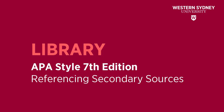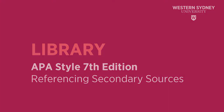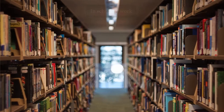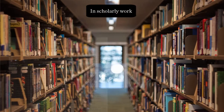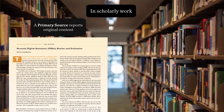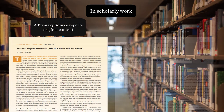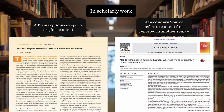This library video will explain how to reference secondary sources in APA style 7th edition. In scholarly work, a primary source reports original content. A secondary source refers to content first reported in another source.